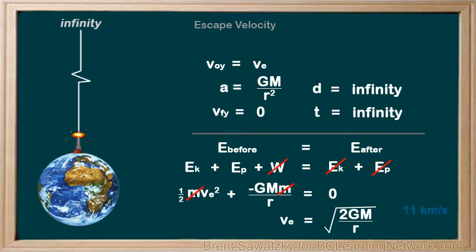For Earth, it's about 11 kilometers per second. For the Moon, it's about 2.4 kilometers per second.